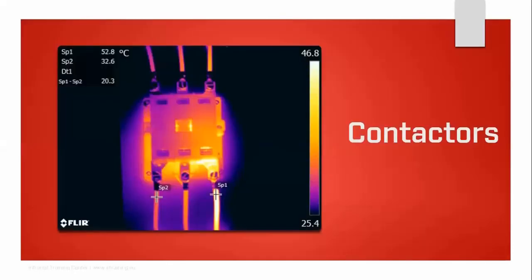Going back to a contactor: we can see the right-hand phase is much warmer than the others. We need to ask ourselves: could it be a load imbalance? Could it be a loose connection? Or could it be an internal contactor fault? The answer will be revealed shortly.